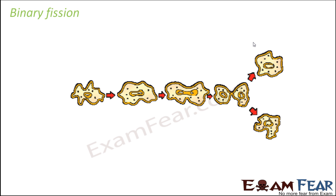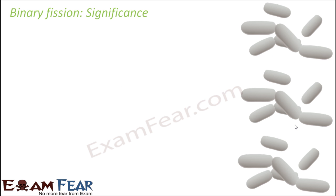Here we have shown a picture of amoeba. The nucleus gets elongated and finally gets divided into two parts. The nucleus separation is followed by the separation of the cytoplasm, and as a result two identical daughter cells are produced.